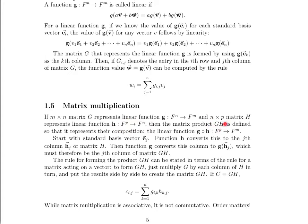Well, the matrix product GH is defined so that it represents their composition G composed of H, basically H goes first. It takes a vector in F^p and spits out a vector in F^n, and then G goes second. G takes that vector in F^n and then spits out a vector in F^m. So, the full composition of this function, that's how we write composition of functions, G composed of H starts with a vector in F^p and then ends with a vector in F^m after the whole process is complete.